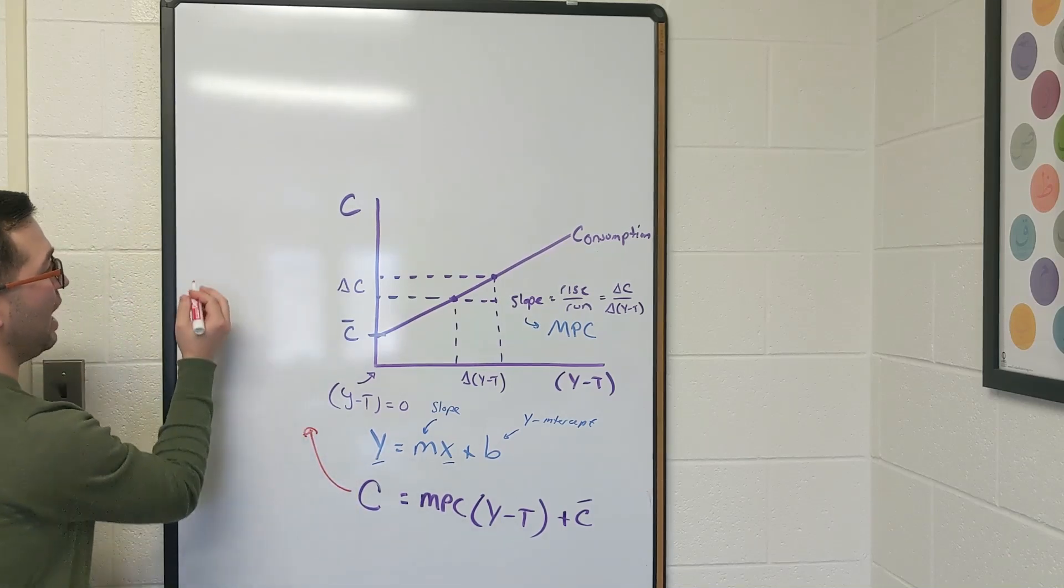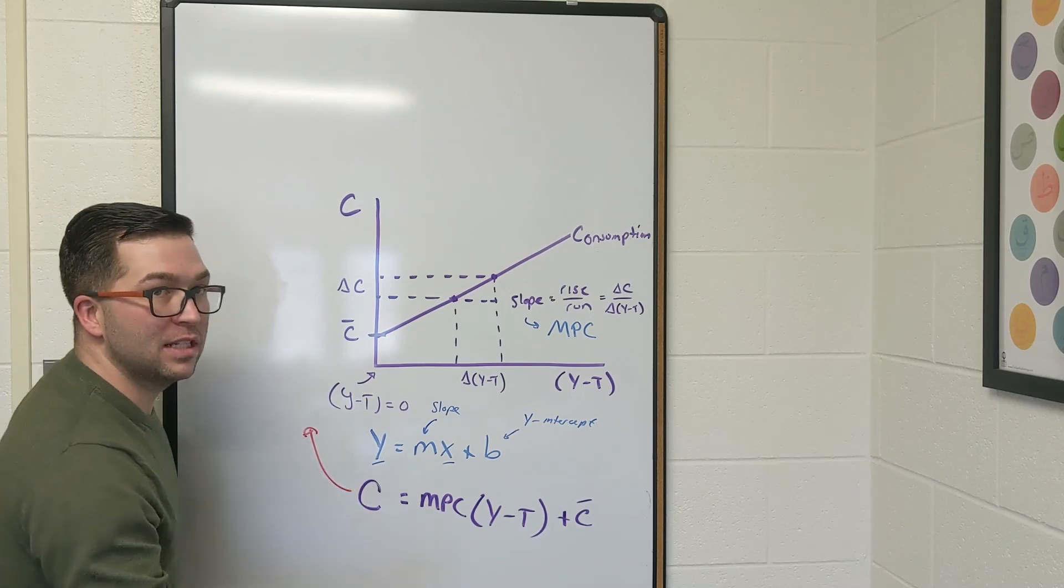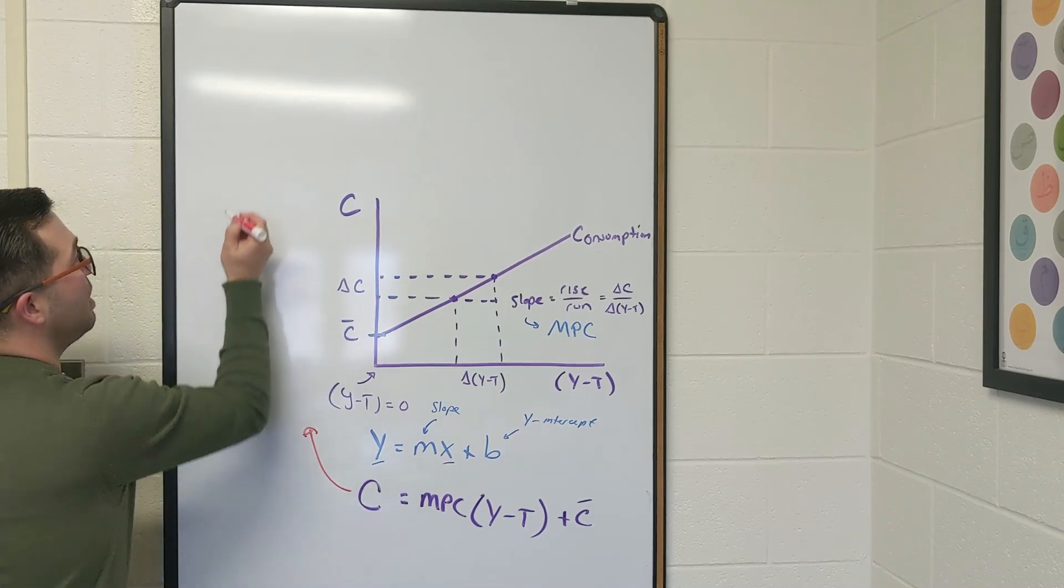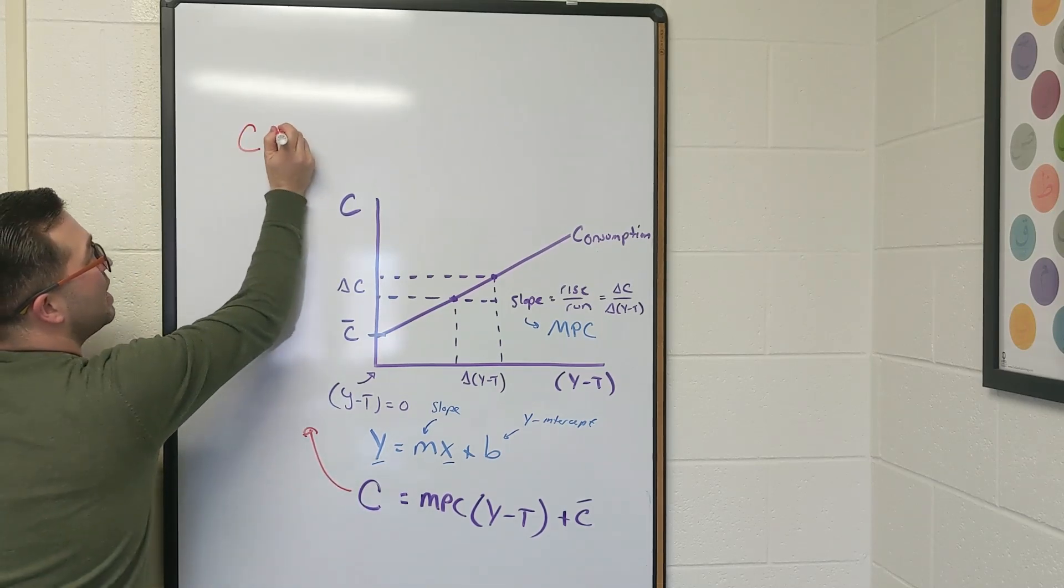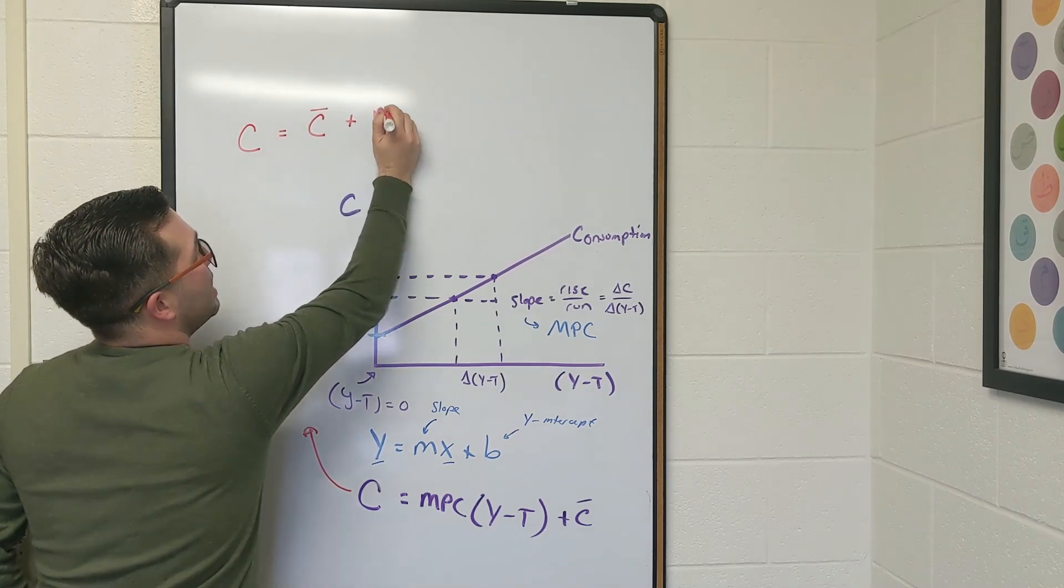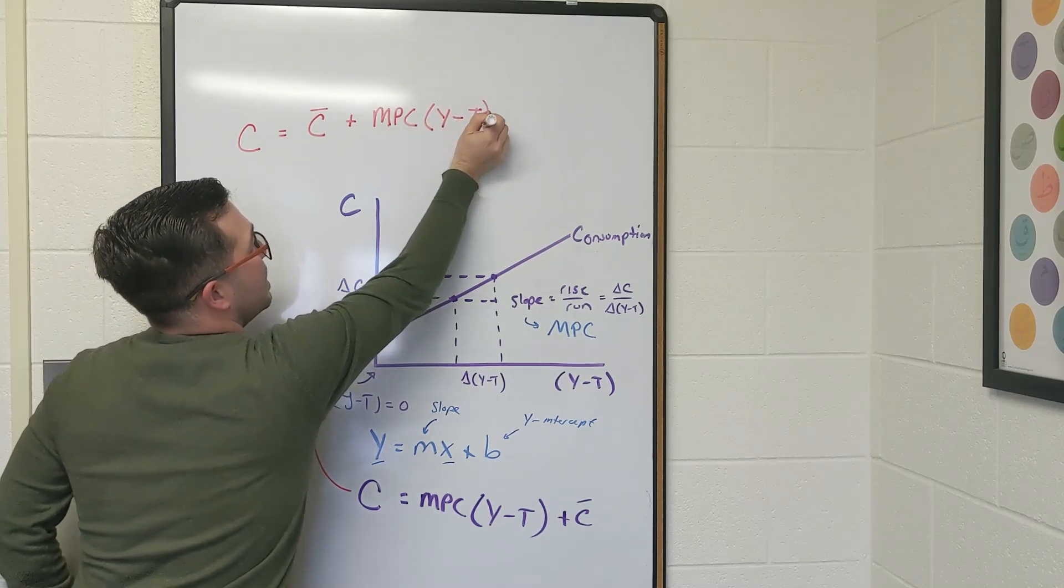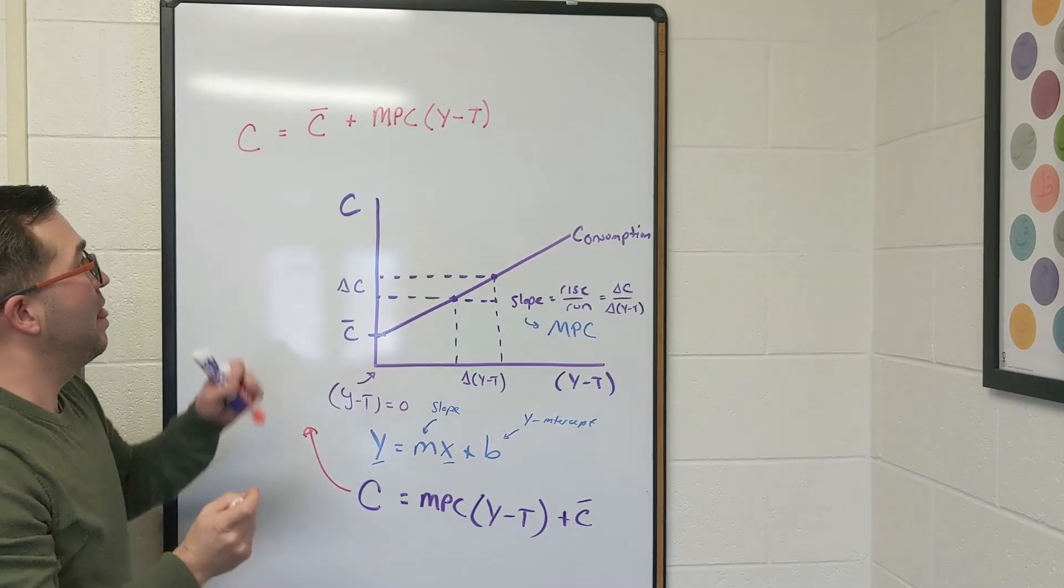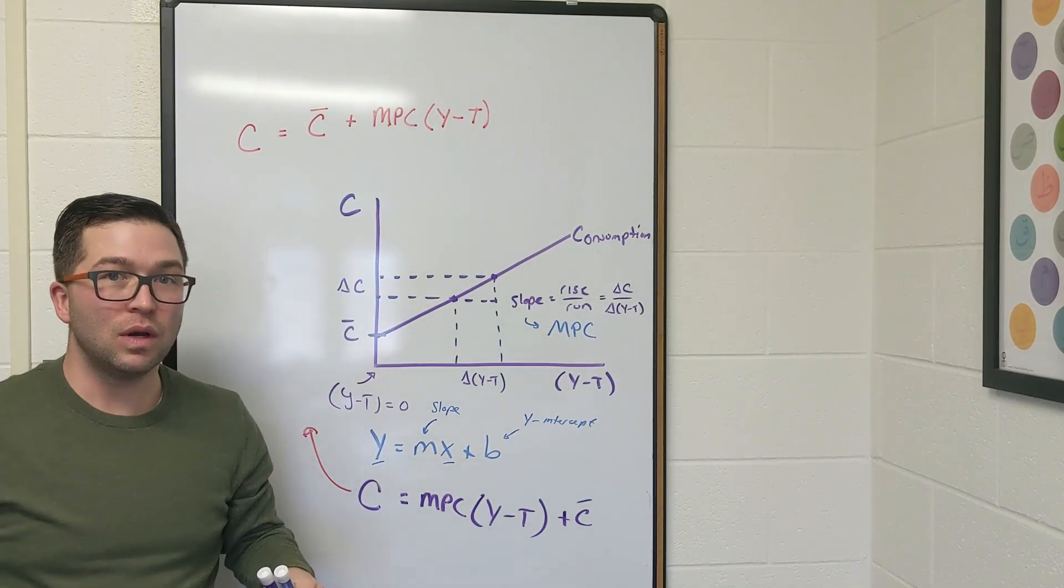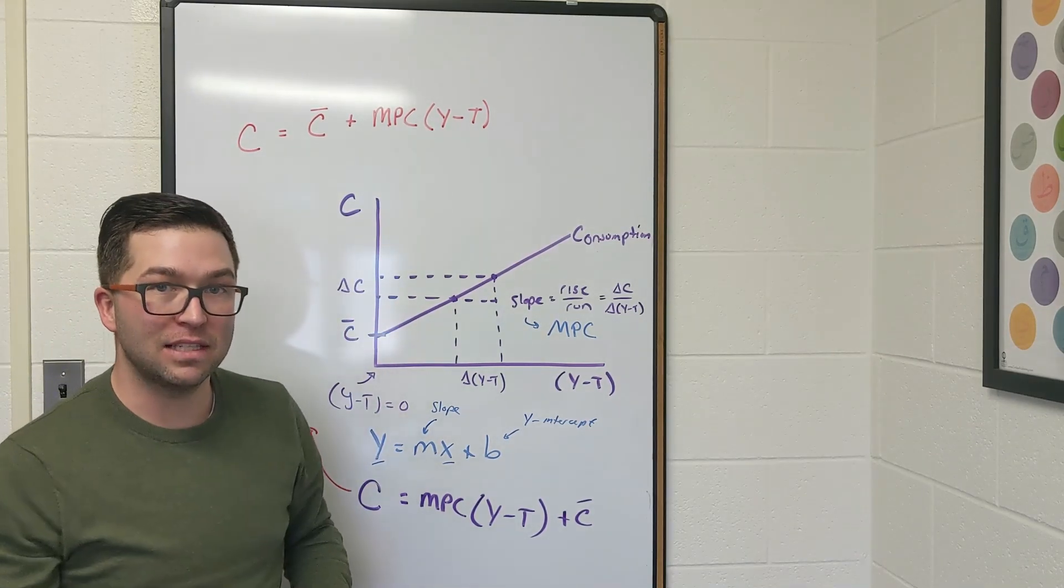Our end result is we're going to say that our equation for the consumption function is going to be C equals c-bar plus mpc times y minus t. This is what we're going to use when we start to enter into the algebra section of this lesson.